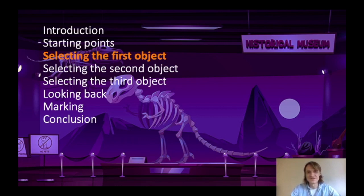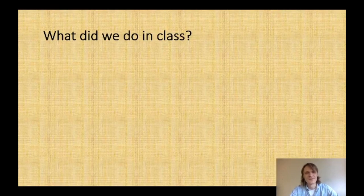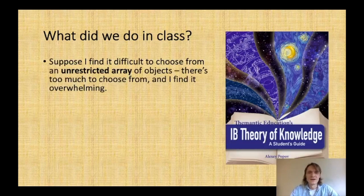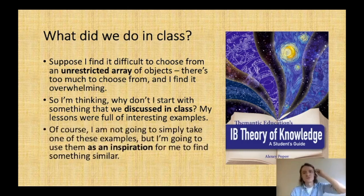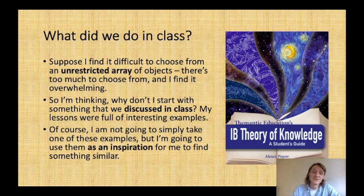Let's go over to the key task — selecting the first object, which seems to be the most difficult step. I'm imagining a student thinking back about class. I find it extremely difficult to choose from an unrestricted array of objects — the world is just too big, and I feel overwhelmed. To narrow down my choice, why not start with something we discussed in class that I found very interesting? I'm not going to simply take a textbook example as-is, but use it as inspiration to find something similar and enhance my thinking process.